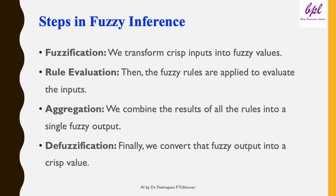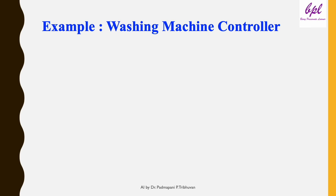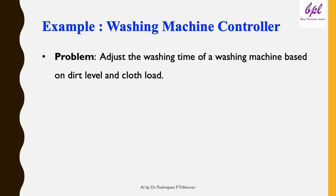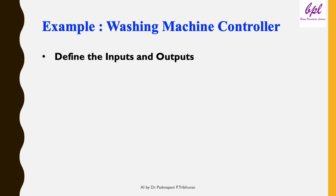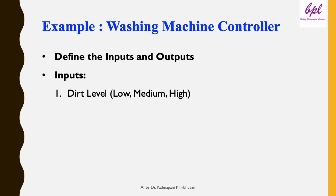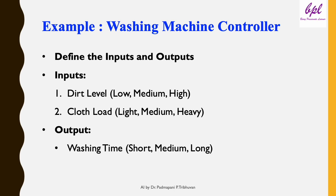Let's explore an example of a fuzzy inference system that adjusts the washing time of a washing machine based on two inputs: dirt level and cloth load. In this system, inputs are dirt level (classified as low, medium, and high) and cloth load (classified as light, medium, and heavy). The output is washing time (classified as short, medium, and long). For instance, dirt level could be 70% medium and 30% high depending on the condition of the clothes.